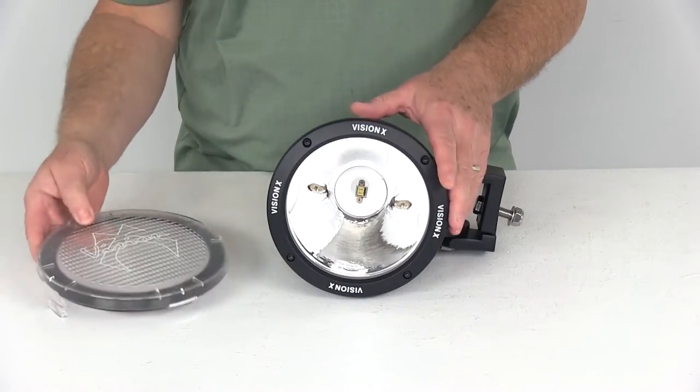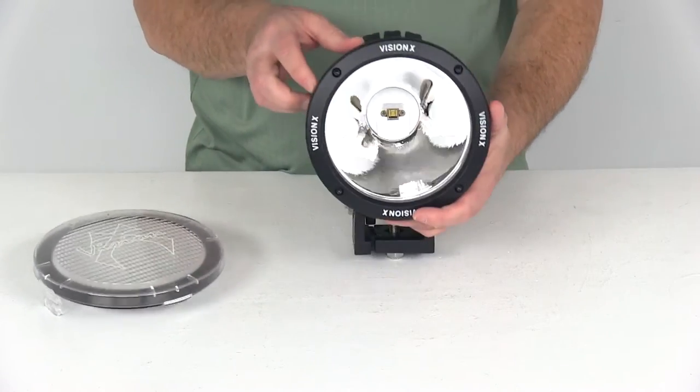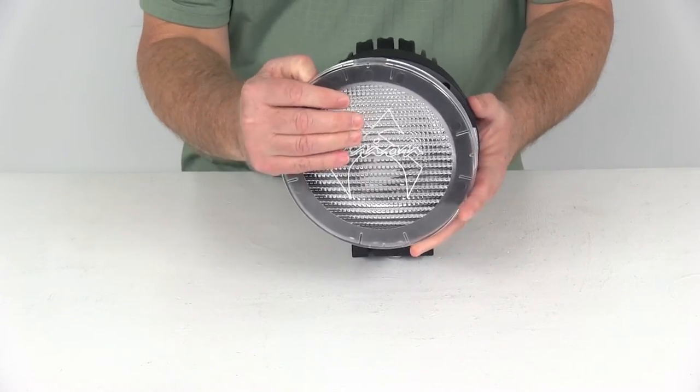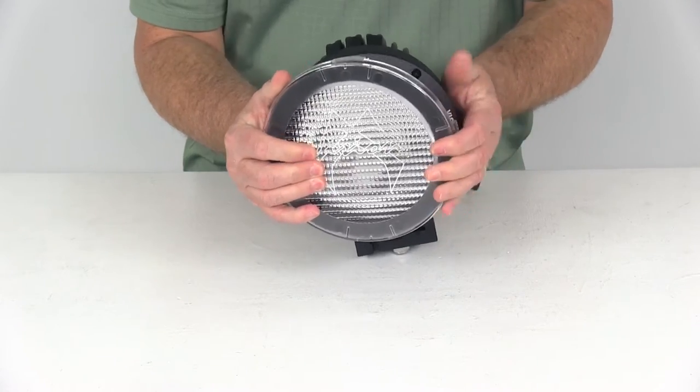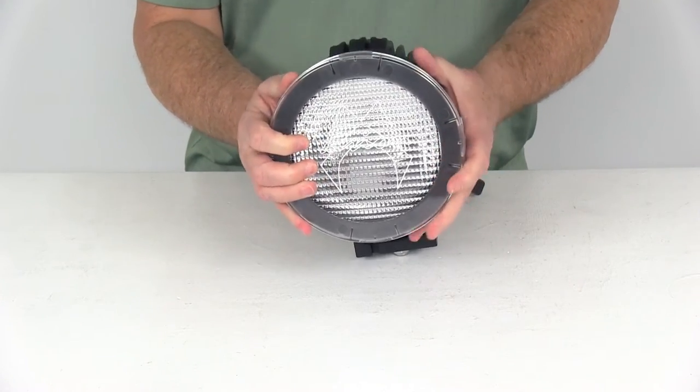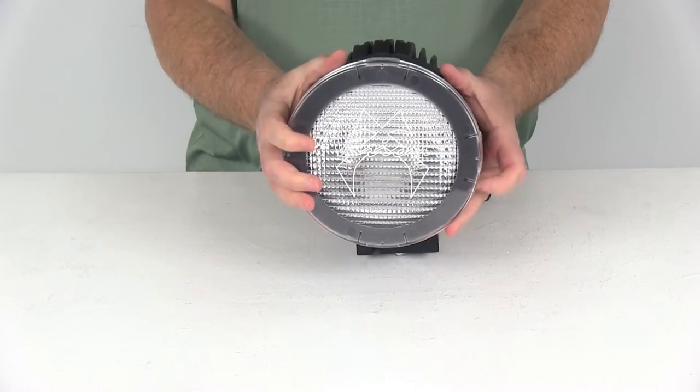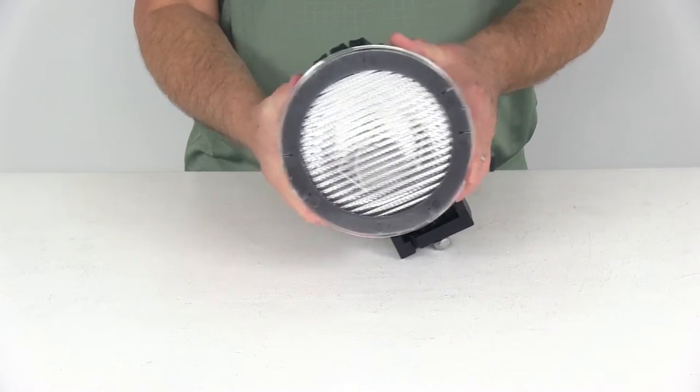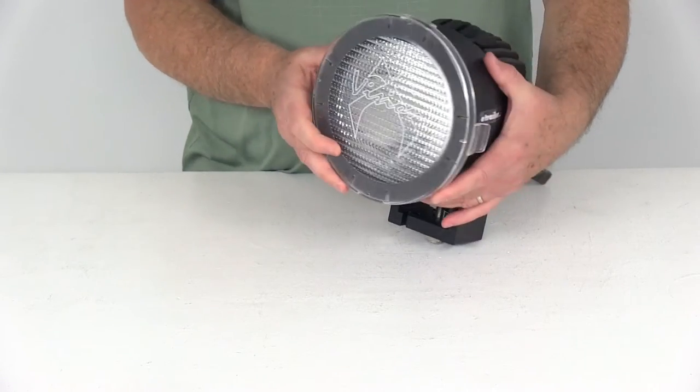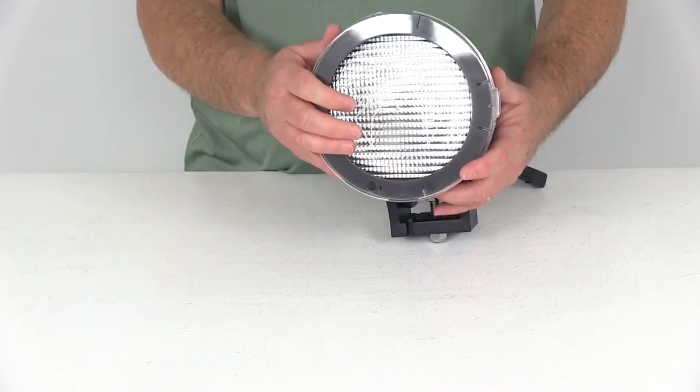It's pretty simple. I'll just hold it up this way and show you what you do: just line this up and pop it right on. It says top right up here so you put this on the top to give you the correct pattern. You can see it seals real nice, has the rubber seal on the inside and it protects the light from any damage.